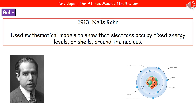Our fourth and final scientist is Niels Bohr. In 1913, he used mathematical models to show that electrons occupy fixed energy levels, or shells, that surround the nucleus — improving on Rutherford's model. The diagram in the bottom right should look very familiar, as it's still the model we use today: a nucleus made up of neutrons and protons, with electrons arranged in their fixed shells surrounding it.